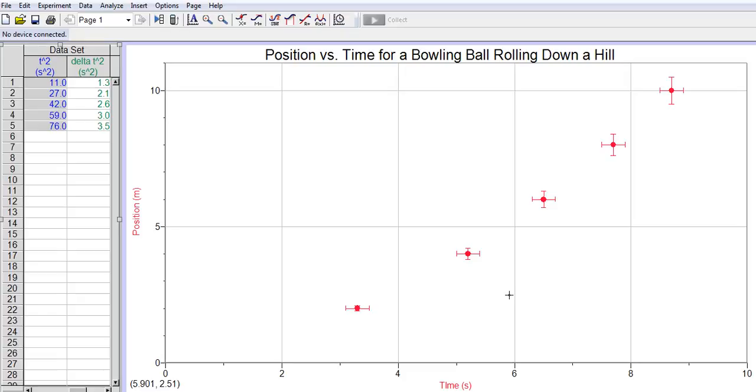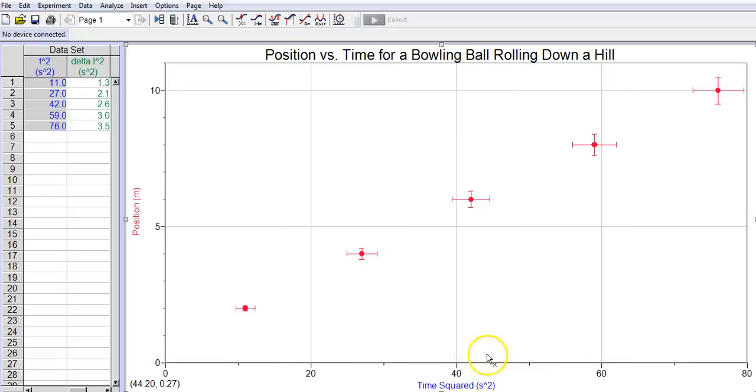All right. So now, all I have to do to change the graph is go down here on the horizontal axis and click, and I can change this to any of the data table lines I have. So, I'm going to change it to time squared, and boom. There you go. We got a nice straight, what looks to me like a nice straight line.